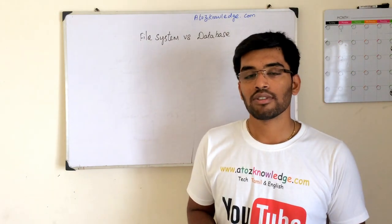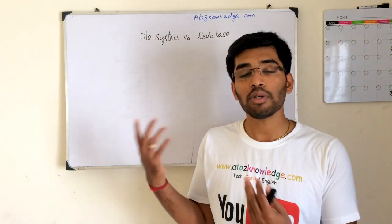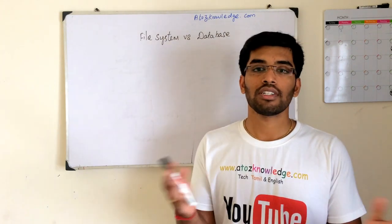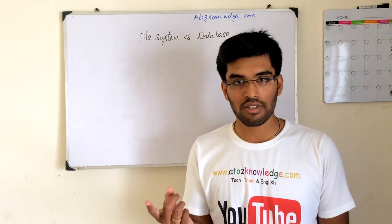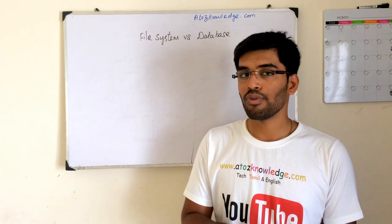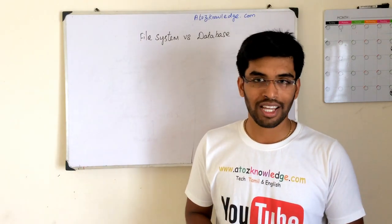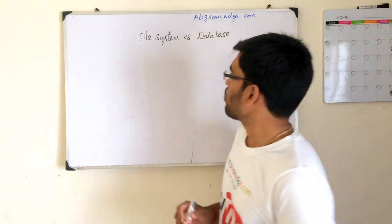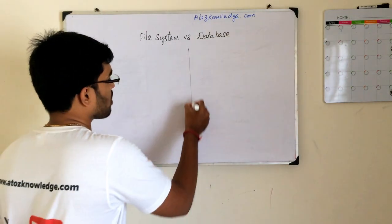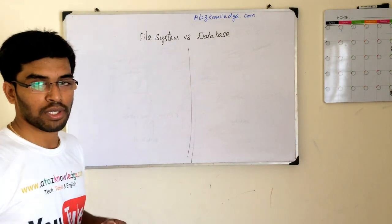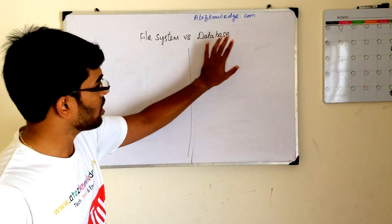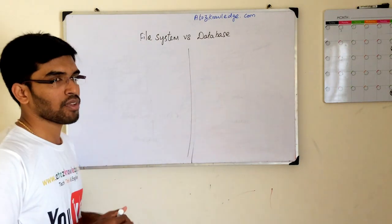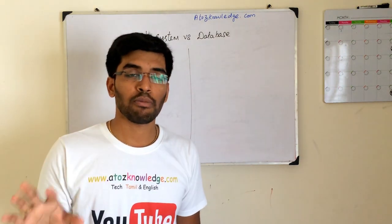Now we know what a file system is. Even a database is also used to store data, right? So what is the difference? I will give you an example to understand file system versus database, because in both cases we are storing data — but what's the difference?